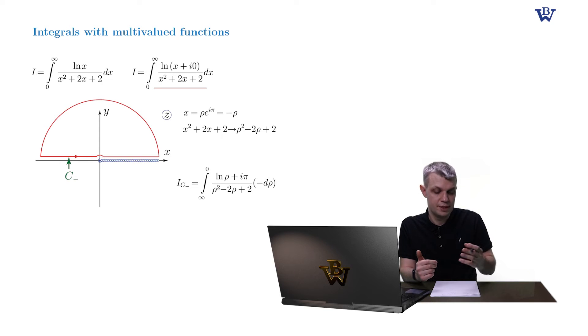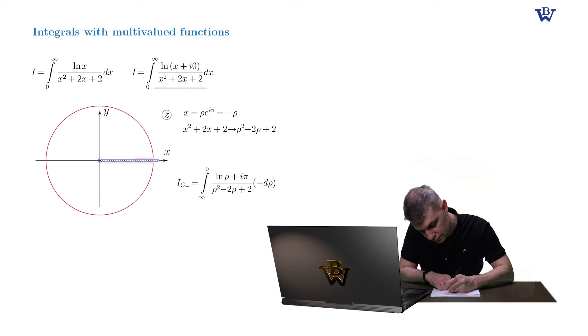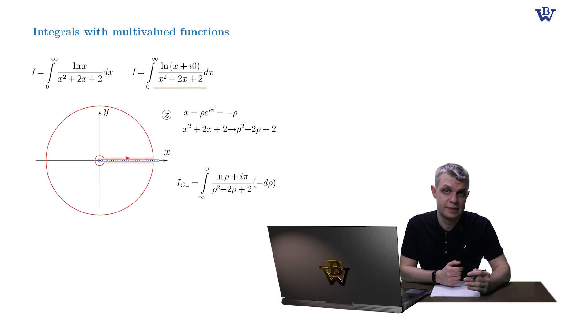So the only path which is left to us is our standard semi-infinite dumbbell. But as we remember from our second example, the log-containing integral taken along such a contour cancels out. So let me remind you how it happened.